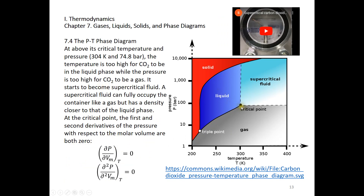The critical temperature of CO₂ is 304 K, which is roughly 31°C. At the critical point, the pressure is about 75 bars. Beyond this critical point, you do not have distinct liquid or gas phases — instead you have what is called a supercritical fluid. It's not a new phase; it's between liquid and gas, which is why it's called a fluid.